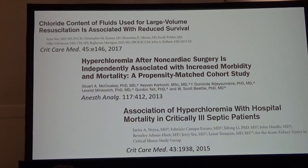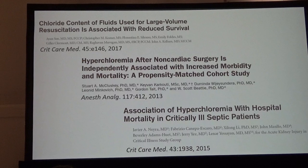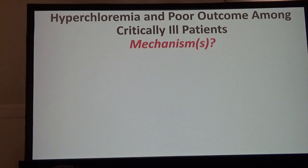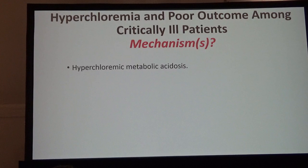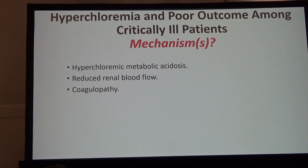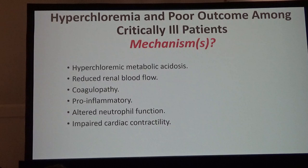This is all adult literature, and really until recently there wasn't much in the pediatric literature — but I'll show you some of that data. So what's the mechanism? I believe the next speaker is going to talk quite a bit about the mechanisms as it relates to acute kidney injury. But certainly there's an element of hyperchloremia causing metabolic acidosis. There's evidence for reduced renal blood flow, evidence for coagulopathy, also evidence for pro-inflammatory states, altered neutrophil function, impaired cardiac contractility, and reduced gastric blood flow.